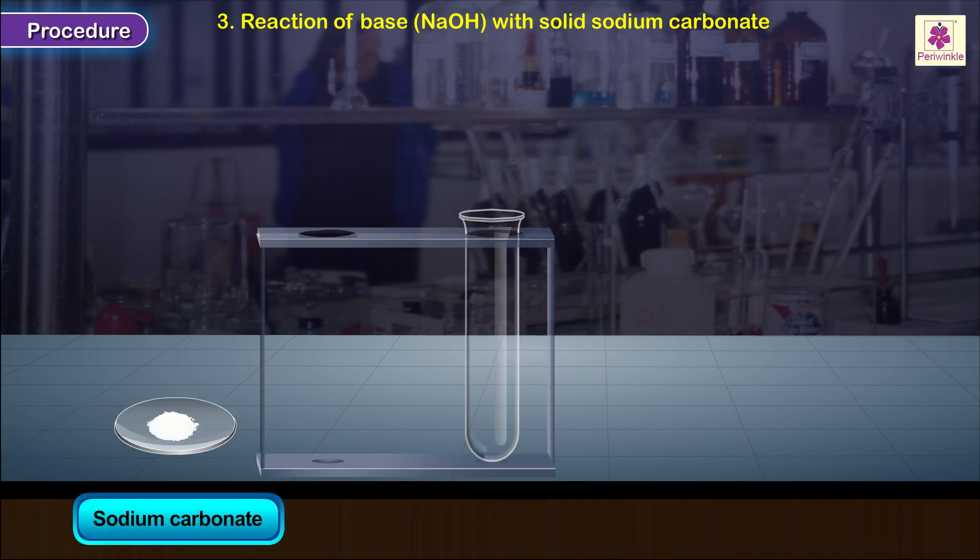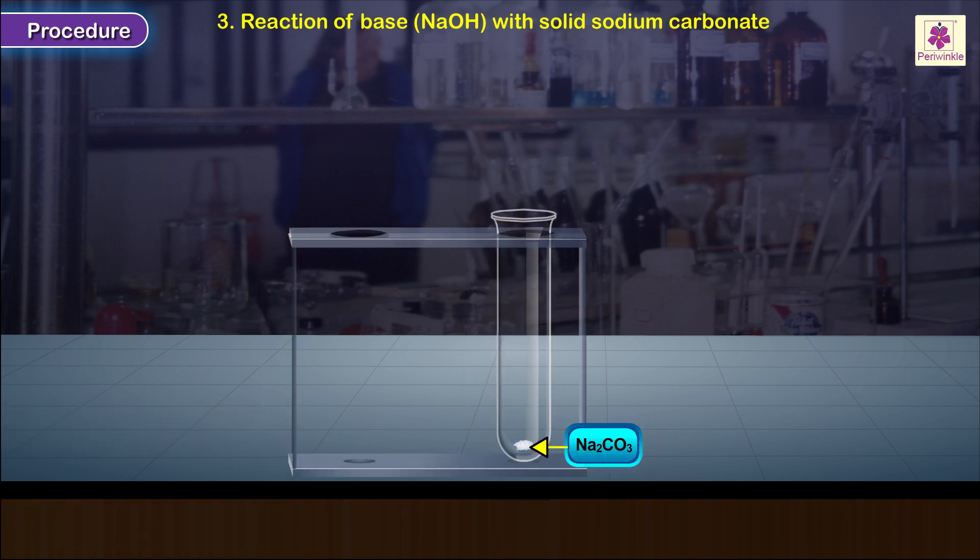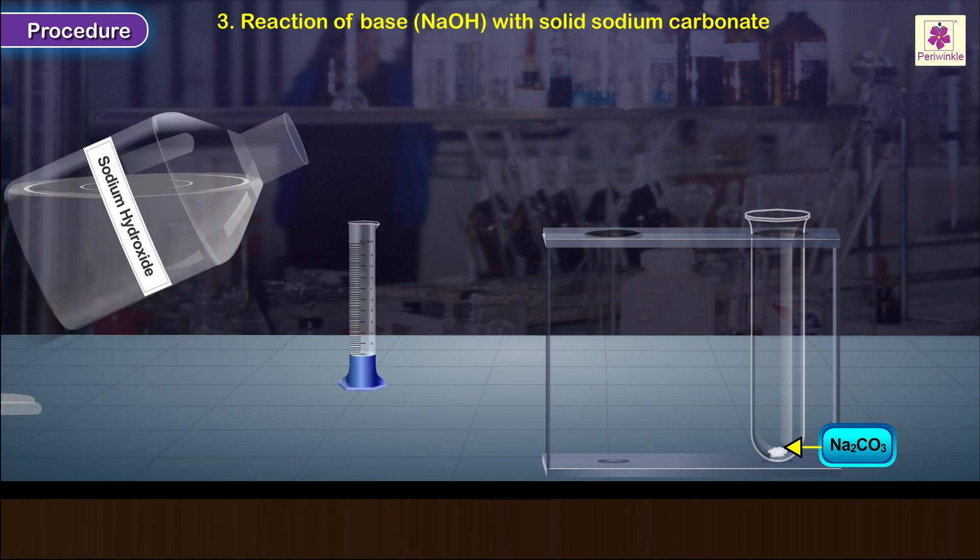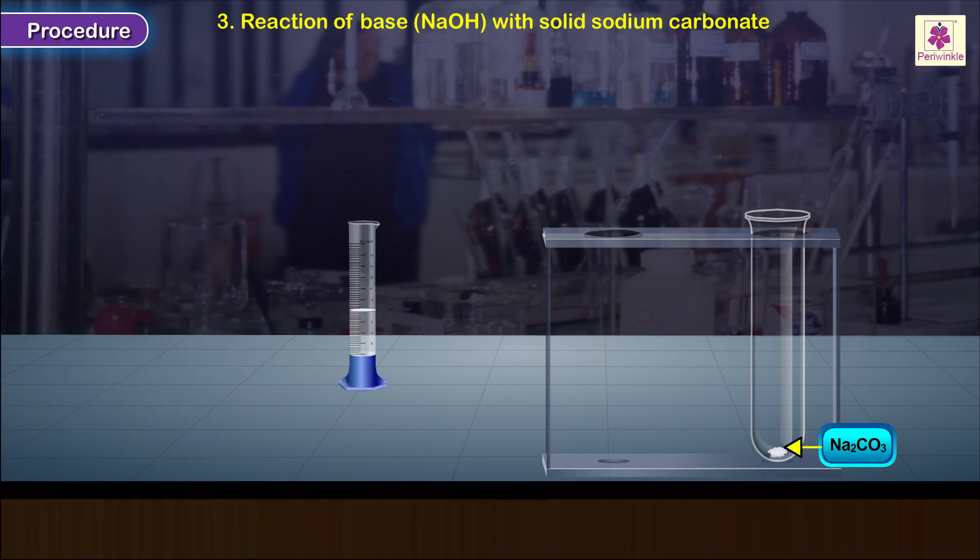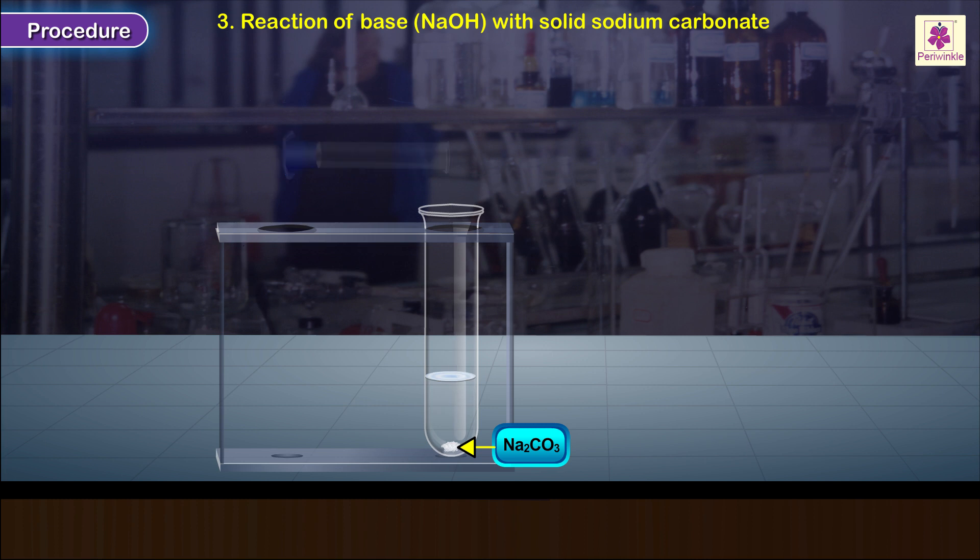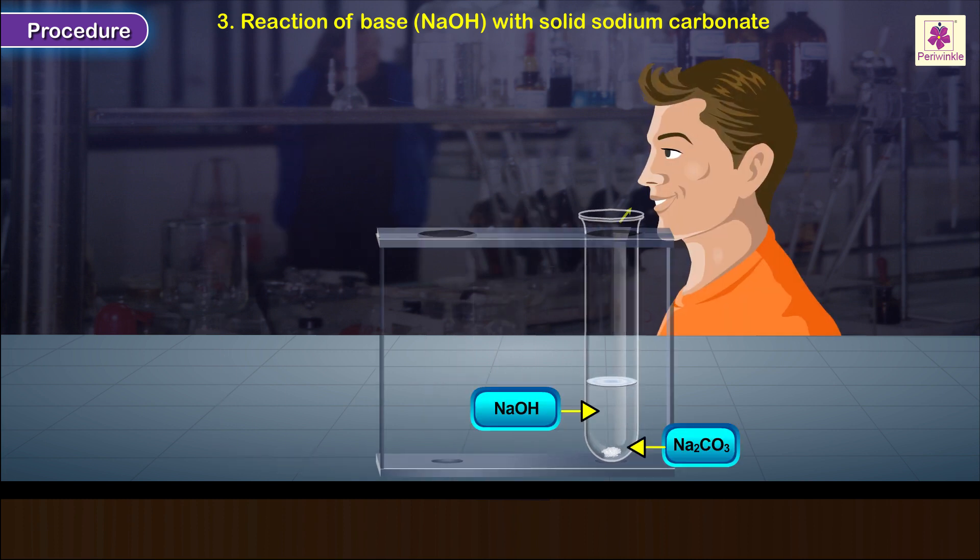Three: reaction with solid sodium carbonate. Take a pinch of sodium carbonate in a test tube. Add to it about 1 or 2 ml of sodium hydroxide solution. Cautiously smell the contents of the test tube and watch out for any signs of a chemical reaction in it.